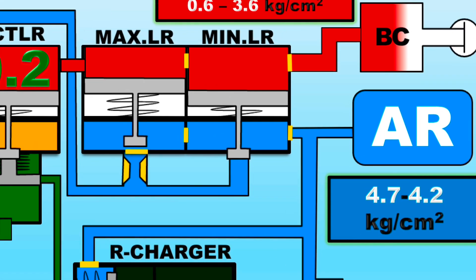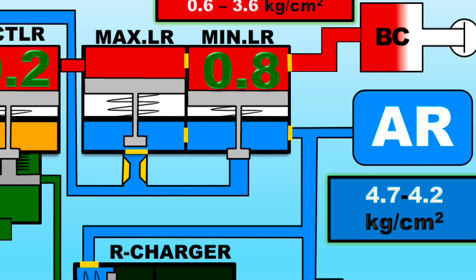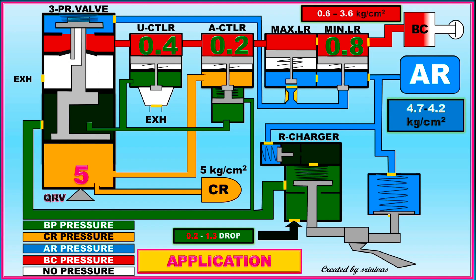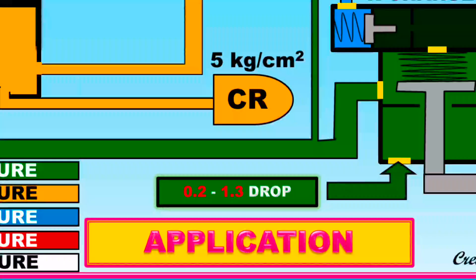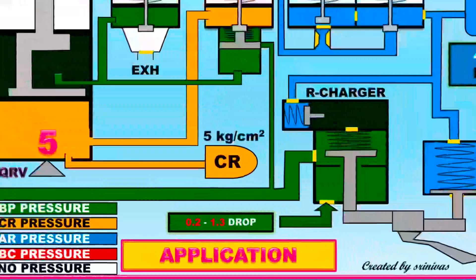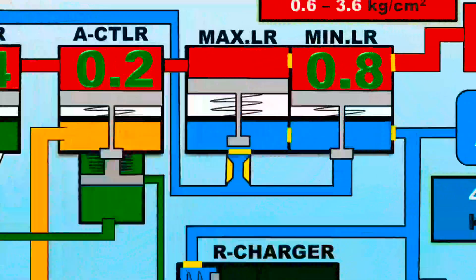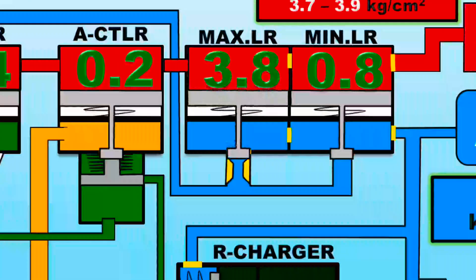When 0.8 BC pressure is reached, the minimum pressure limiter is closed, because the minimum pressure limiter admits air from AR into BC to a pressure of 0.8 immediately during brake application to overcome the resistance offered by the brake rigging. Up to service application — that is, up to 1.3 kg per cm² — these three will be closed. For full service application, the maximum limiter will also be closed. This maximum limiter will not send further pressure into BC.